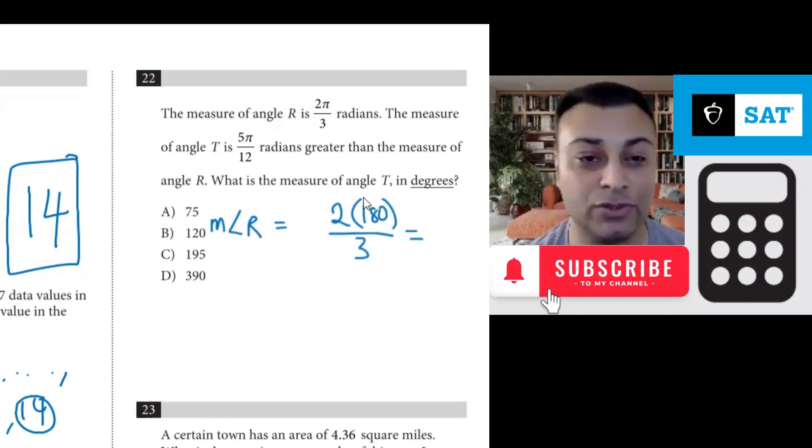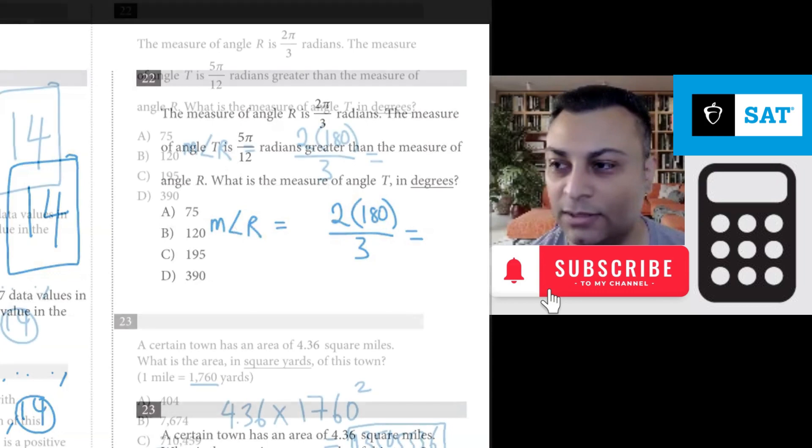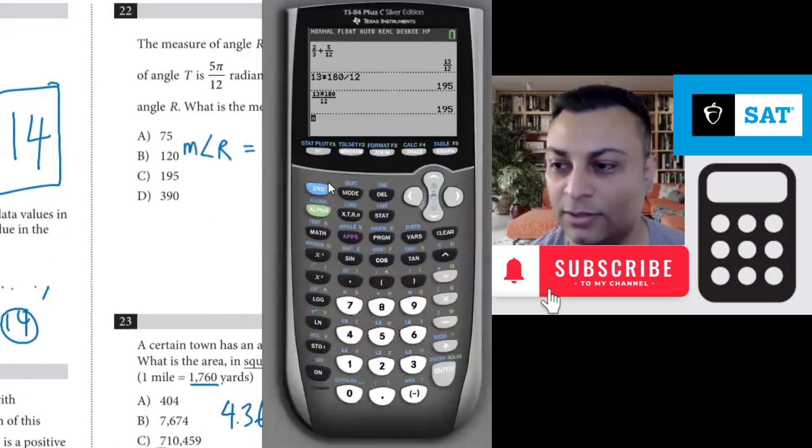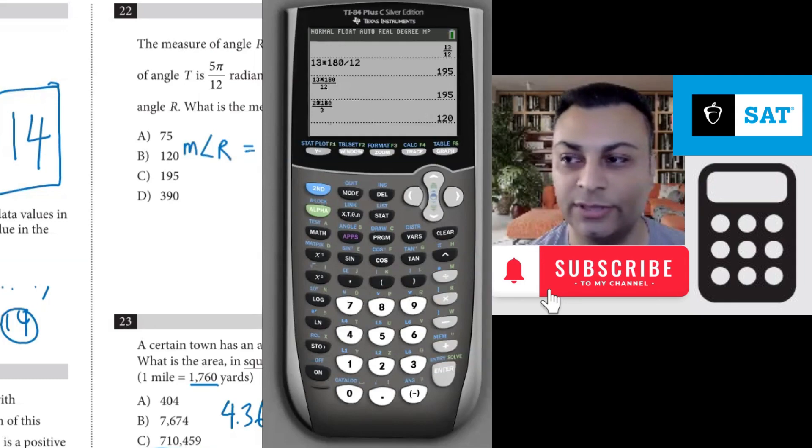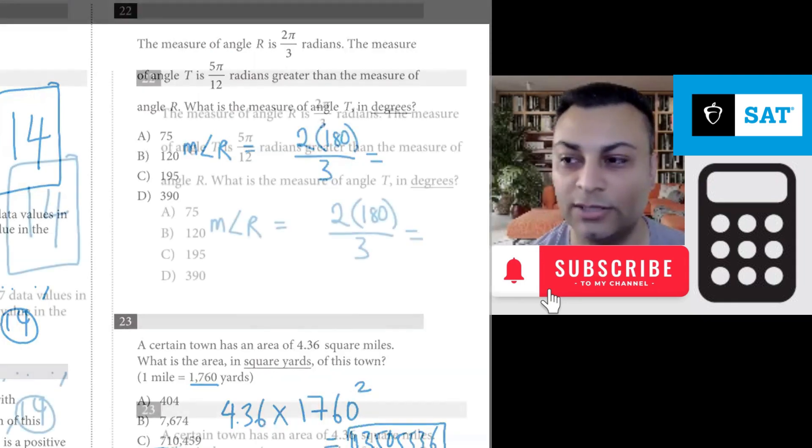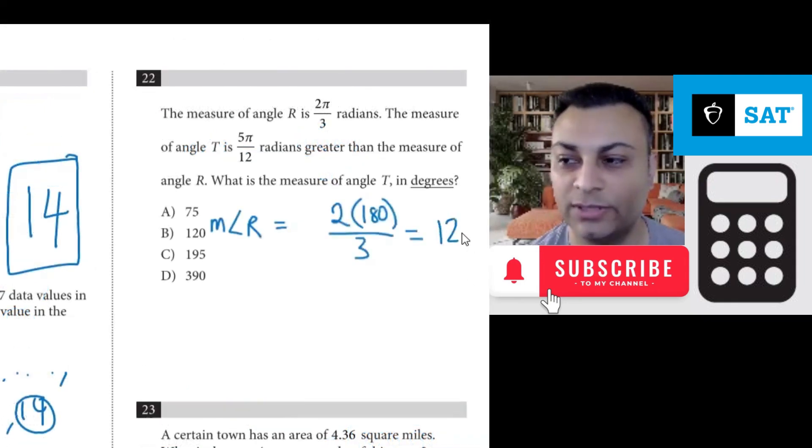If you use the calculator for this, let's go ahead and do that. You'd get the fraction 2 times 180 over 3. And that's 120 degrees. So angle r is 120 degrees.